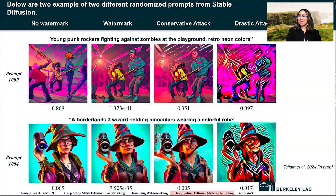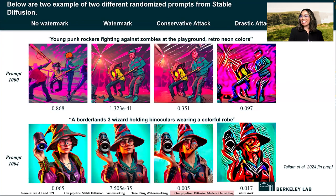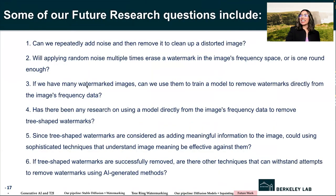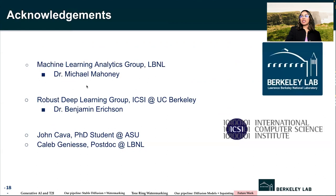These are some randomized examples from randomized prompts we've tried for stable diffusion — showing no watermark, watermark, conservative attacks, and drastic attacks. We are assessing p-values to look at thresholds of detection for watermarks, and seeing if our pipeline can remove the watermarks from these images. There are future questions we are looking at, which I am happy to discuss afterward. Thanks to the team members who have helped significantly with this project.